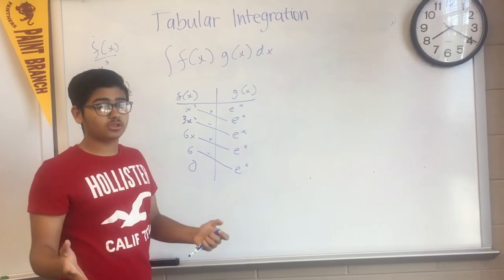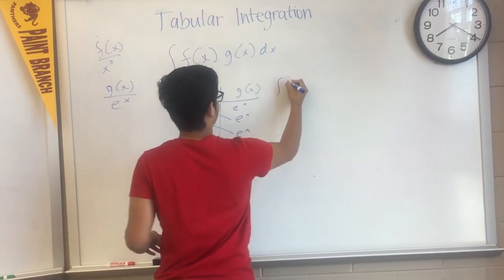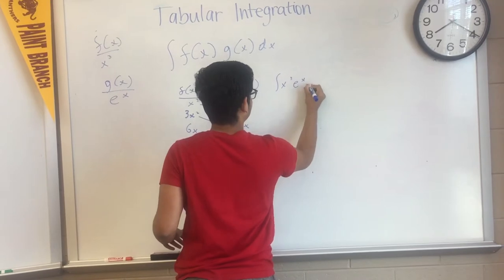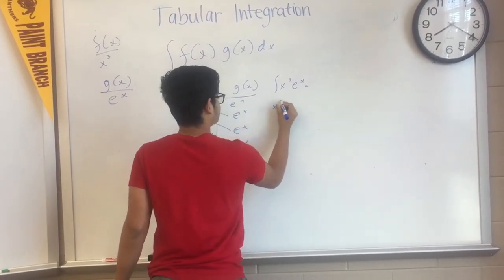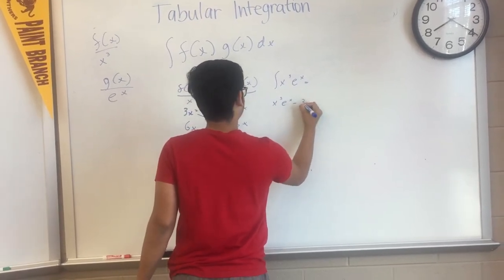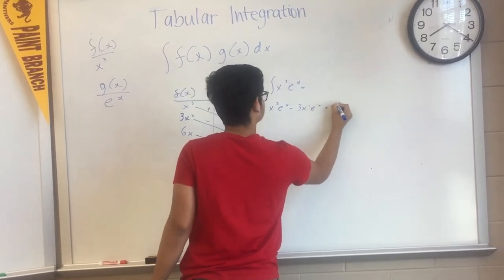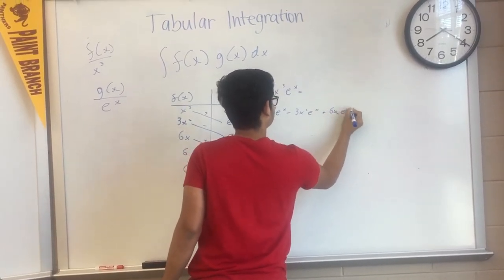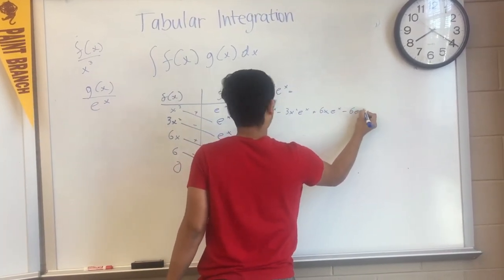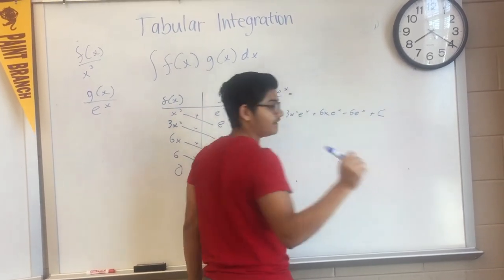So what does this all look like at the end? The integral of x cubed e to the x equals x cubed e to the x, minus 3x squared e to the x, plus 6x e to the x, minus 6e to the x, plus C. Don't ever forget the C.